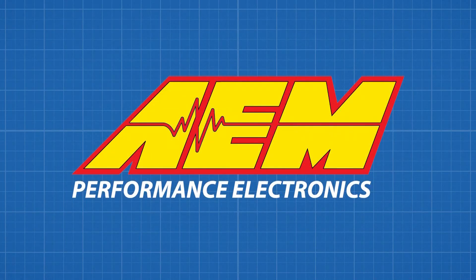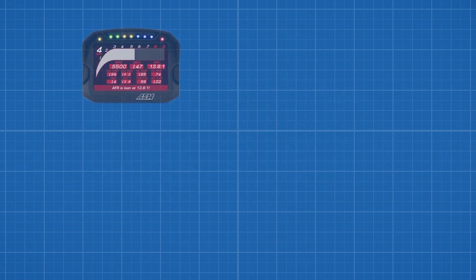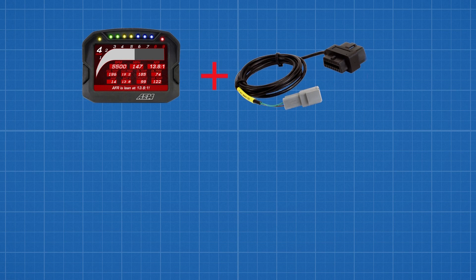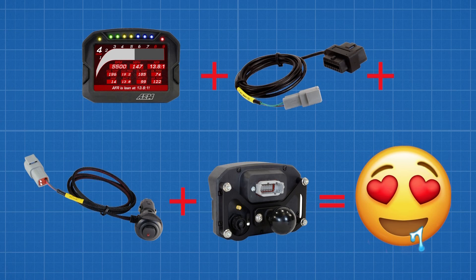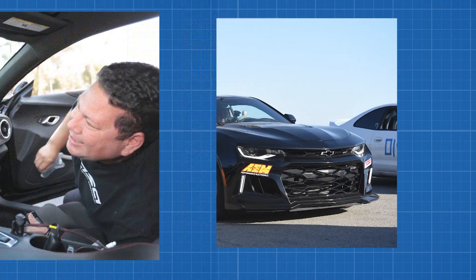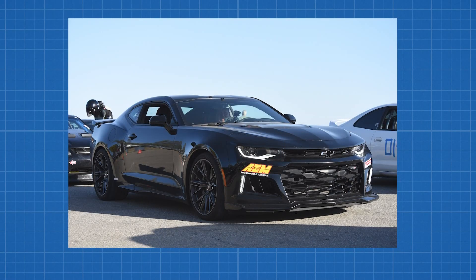So he turned to us. Herb added a CD5 logging dash and a plug-and-play OBD2 adapter cable to get data from the stock ECU. He powered it with a 12-volt adapter cable and mounted it using the RAM mounts arm and a RAM mounts adapter bracket, so he can take it out of the car when he isn't on the track. Herb was pretty happy, so he went to the track.